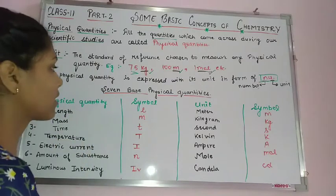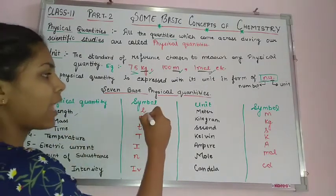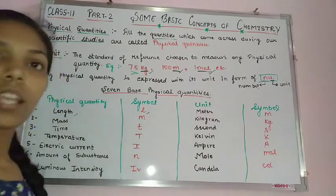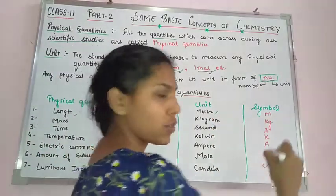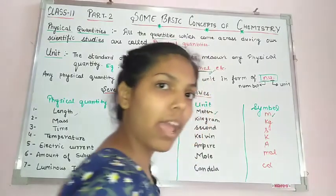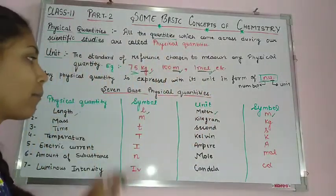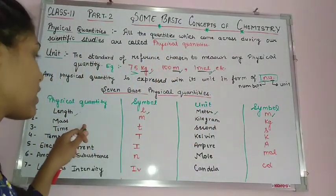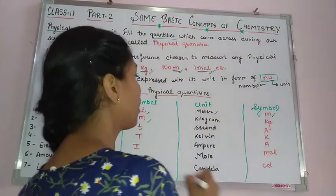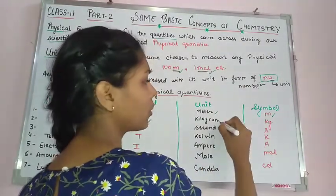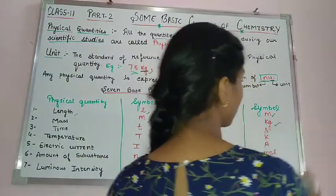The first base physical quantity is length and its symbol is L. The SI unit of length is metre and its symbol is m. The second physical quantity is mass and its symbol is m. The SI unit of mass is kilogram and its symbol is kg.